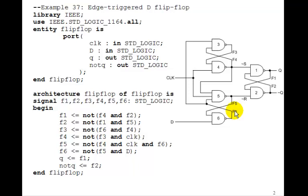So let's just write the logic equations for these NAND gates. F1 is not F4 and F2. F2 is not F1 and F5. F3 is not F6 and F4.